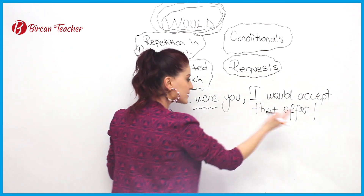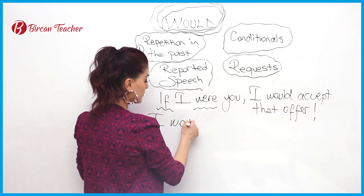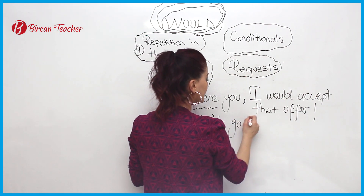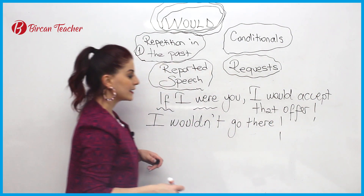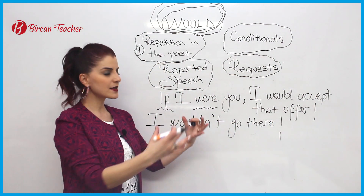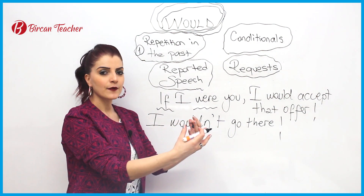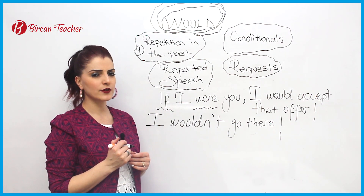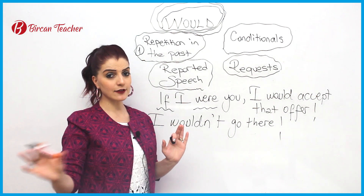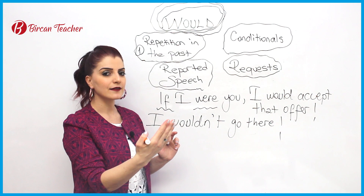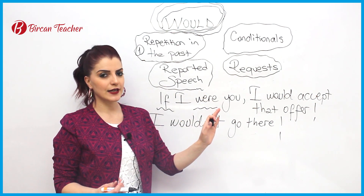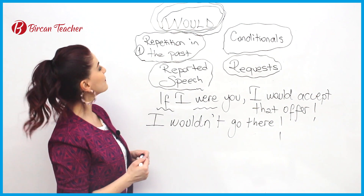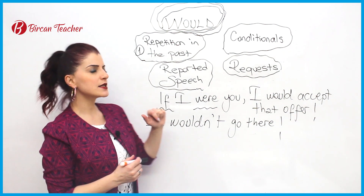Let's see one more example — the negative form. For example: I wouldn't go there. It means there is a place, and there is a possibility for another person. Maybe he or she asks your opinion and you say: I wouldn't go there. This is not your life — he or she is asking your opinion. It's like Type 2: if I were you, I wouldn't go there. This is an unreal and imaginary situation, again showing the present use of 'would.'